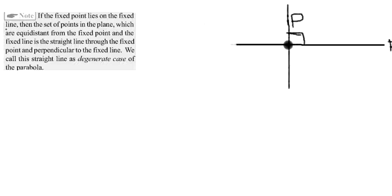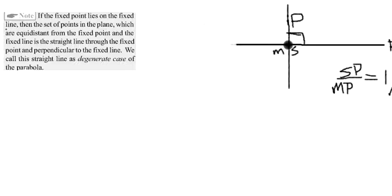If I consider any point P on this locus of points and S is the fixed point, then the distance SP and the perpendicular distance from P to the line — if the point of intersection is M — the perpendicular distance PM will equal SP. So SP equals MP, and the ratio SP by PM will be 1.